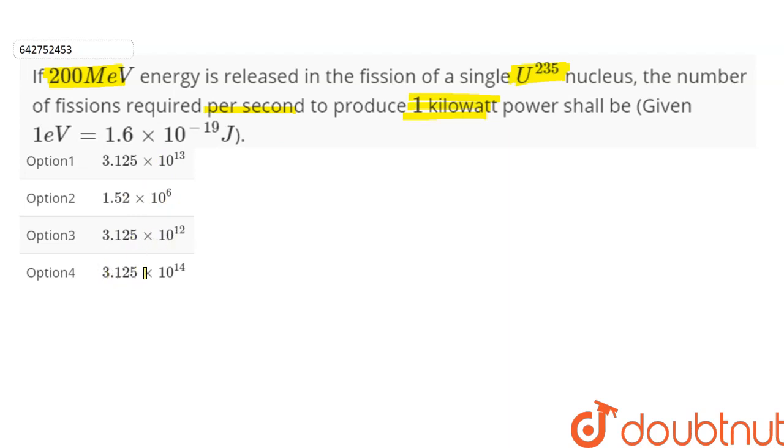So the energy for one fission, denoted as capital E, is equal to 200 MeV, or we can write it as 200 × 10^6 electron volts.